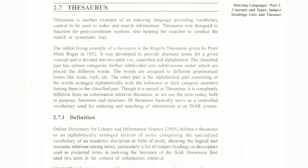Thesaurus is an example of an indexing language providing vocabulary control. It is used to index and search information. Thesaurus was designed to function for a post-coordinate system. It also helps the searchers to conduct the search in a systematic way.